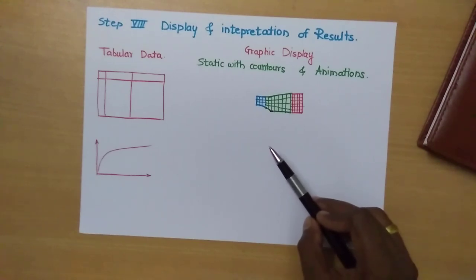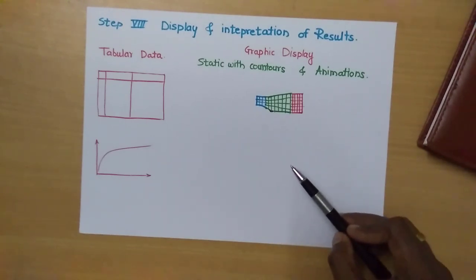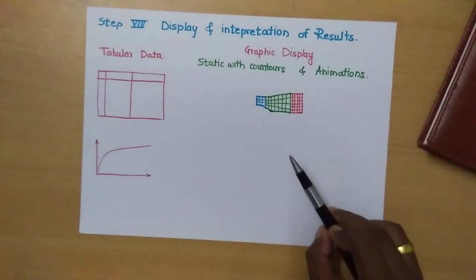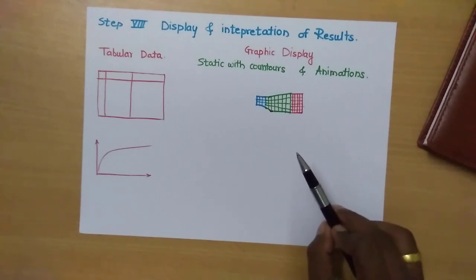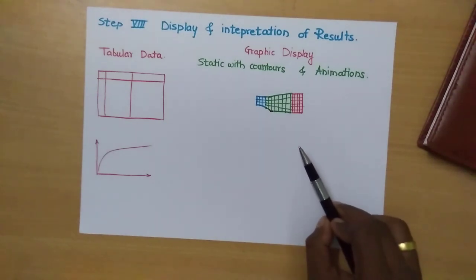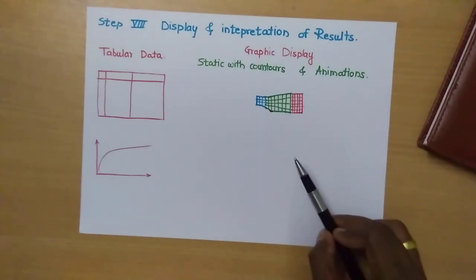So basically there are eight steps in finite element analysis, as explained here. Thank you so much. Please subscribe for more videos.